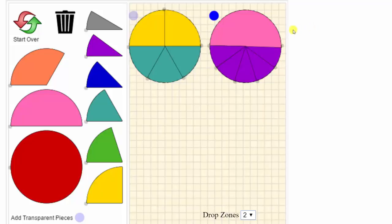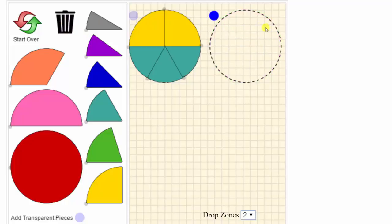If we need to remove a fraction piece, we can just click and drag it to trash. To clear the drop zone, we can click the trash can and all the fraction pieces are removed from that particular drop zone.